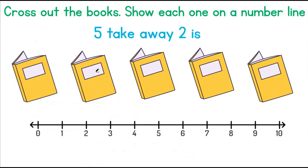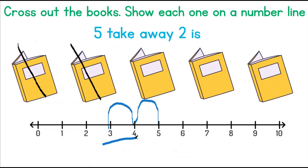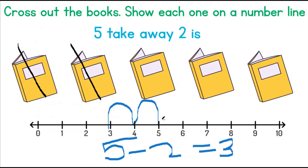5 take away 2. 1, 2. Let's show this on the number line: 1, 2. Our number sentence will read 5 minus 2, which will equal the number 3.